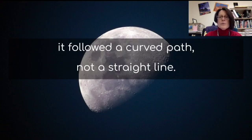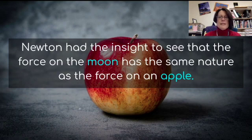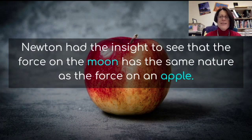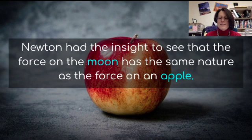In order for the moon to follow a curved path, there must be a force on it. Newton had the insight to see that the force on the moon has the same nature as the force on an apple. If you were to throw an apple, it also follows a curved path because of the force of gravity on it.